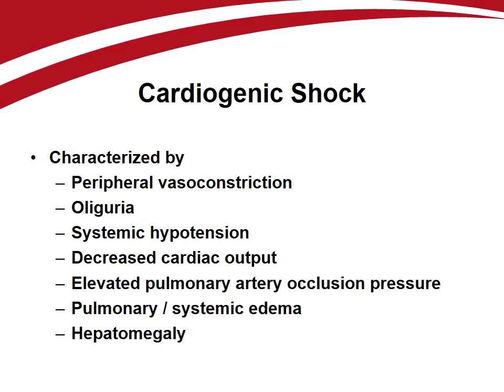On physical examination, signs of peripheral vasoconstriction are evident and oliguria is common. The typical hemodynamic profile includes systemic hypotension with decreased cardiac output and elevated pulmonary artery occlusion pressures. Physical examination findings of pulmonary and peripheral edema as well as hepatomegaly may suggest volume overload, but are commonly due to third spacing of fluid due to shock, with relative intravascular volume depletion being present.